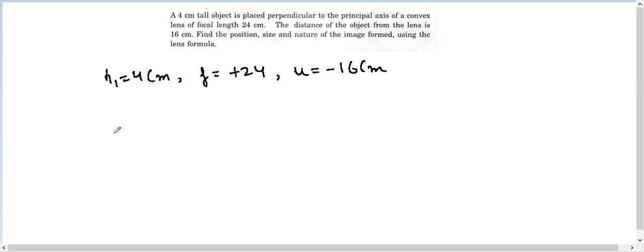We are going to use the lens formula now, so 1/f is equal to 1/v minus 1/u. So 1/24 is equal to 1/v minus of minus 1/16, so it gets cancelled, so it comes out to be 1/v plus 1/16.